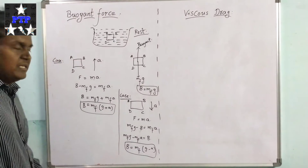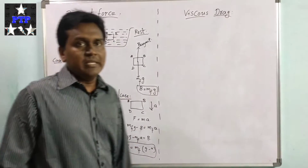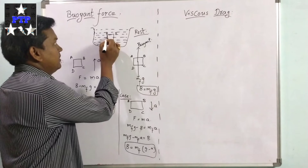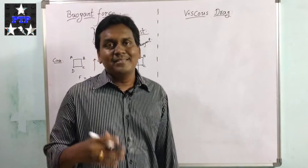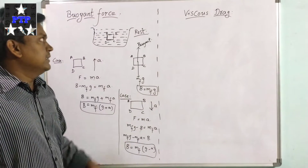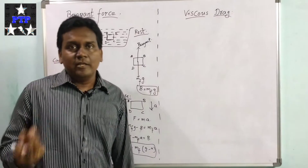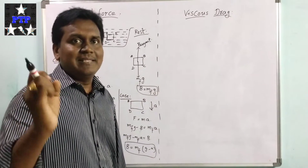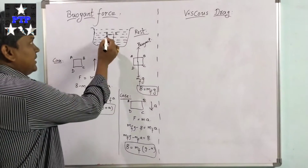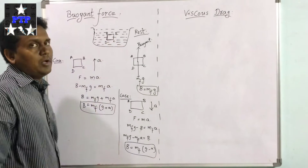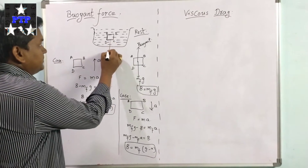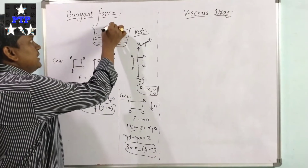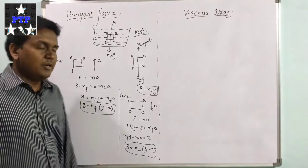One more thing — if this part of the fluid A B C D is replaced by an object having the same volume but made of a different material such as iron or wood, then irrespective of the material, the biont force remains the same. The mass of the object and gravity act downward, and biont force acts vertically upward.